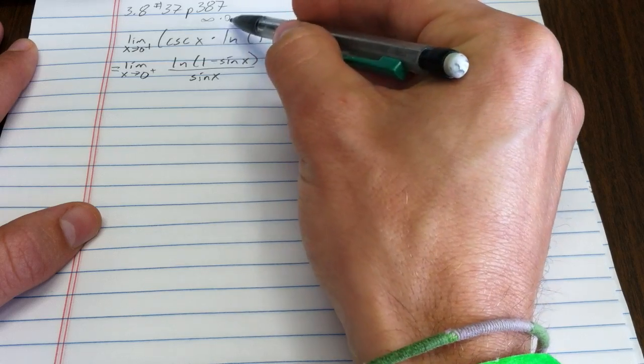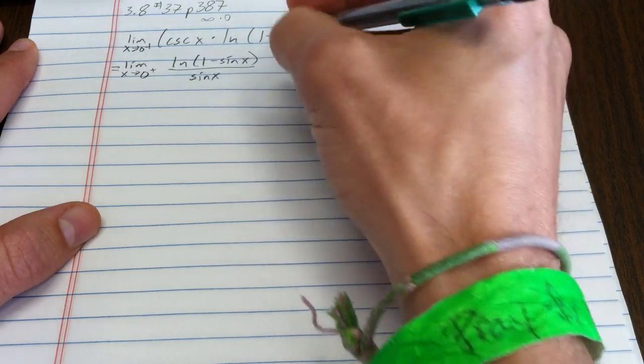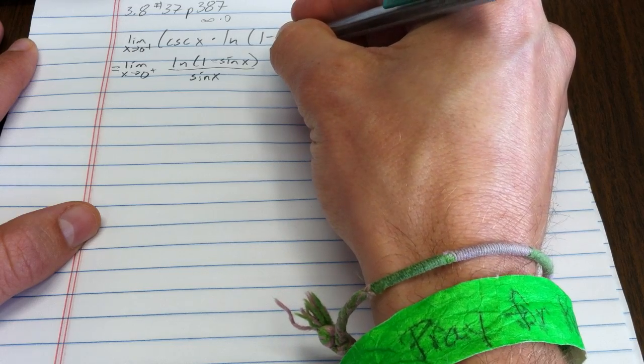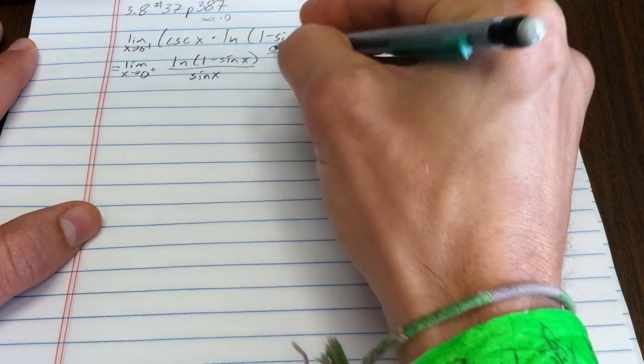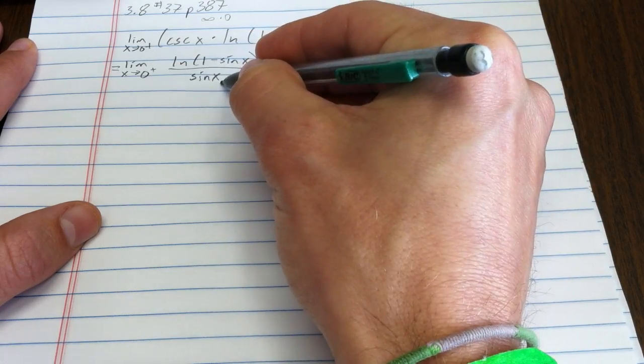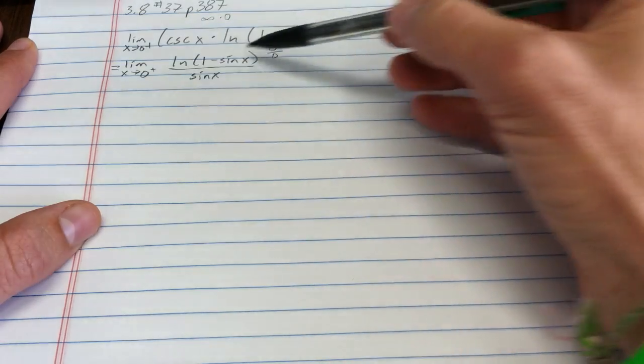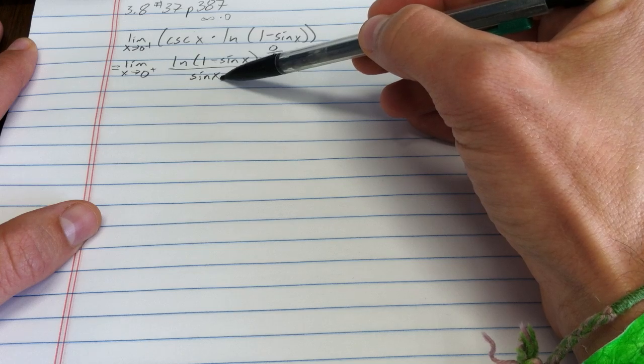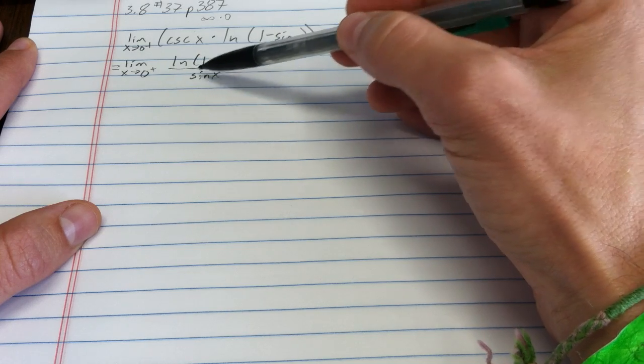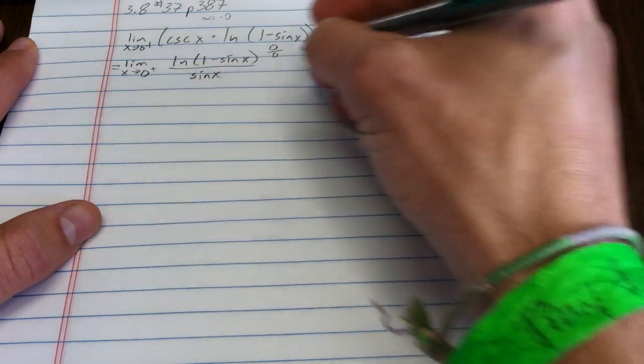Now notice what I've done is I've gone from indeterminate form infinity times 0. We agreed that this had limit as x goes to 0 from the positive side of 0. This has limit 0. So now I have indeterminate form 0 over 0. The numerator is defined, the denominator is defined and differentiable, and the denominator is not equal to 0, so L'Hôpital's rule applies.